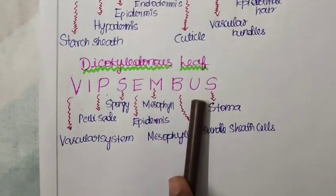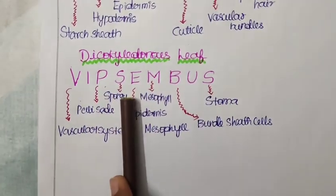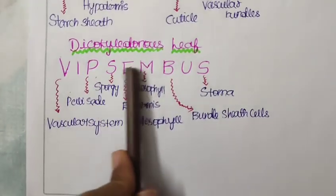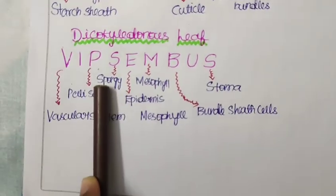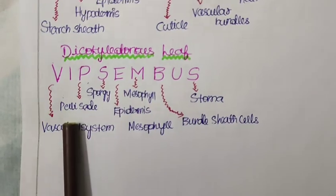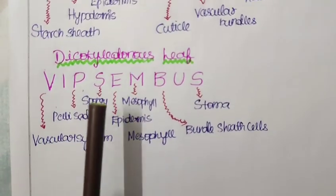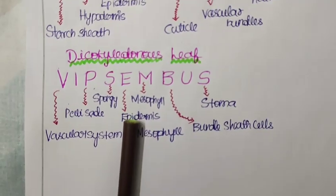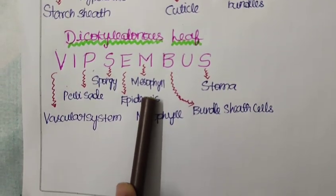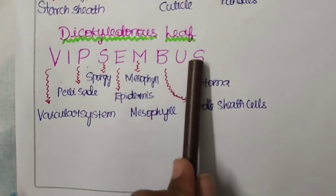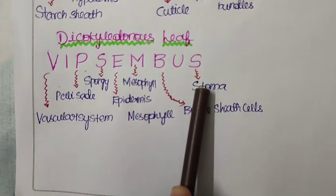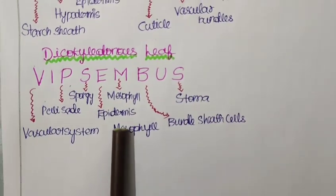It is given by VIP sem bus. So for VIPs they are giving the bus during the semester. So it is given as VIP sem bus. V for vascular system, I for palisade parenchyma, P for spongy parenchyma, S for endodermis. And another M for mesophyll and B is for bundle sheath cell and S is for stoma. This is an example for dicot leaf.